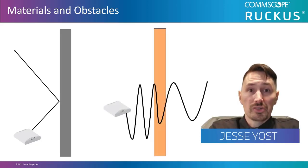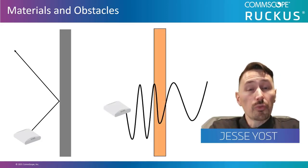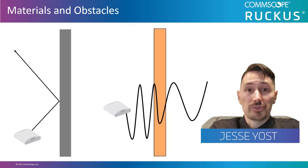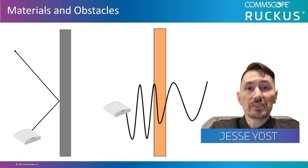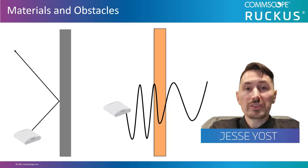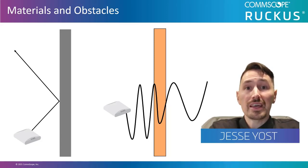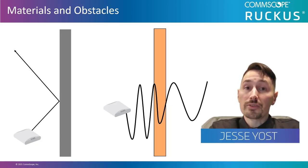Now on to absorption. This happens when the RF waves are able to pass through an object. In the example shown here, you'll notice that the wave changes as it passes through the material. This is because the RF wave is being absorbed as it passes through. What's important to note here is that most walls in modern construction will absorb the RF waves and allow them to pass through. However, some materials are a little more stubborn than others.